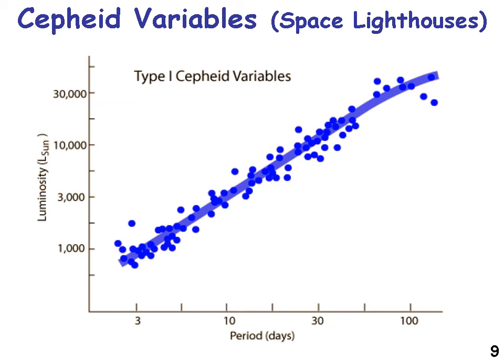Looking at this graph, it compares luminosity — how bright something is compared to the sun — against a period of time in days. Cepheid variables are brighter when the blinking on-and-off timing is slower. For example, if it takes a hundred days to cycle from one bright time to the next, that corresponds to a luminosity of thirty thousand times brighter than the sun. Because luminosity and period correlate so neatly, these space lighthouses are very useful for measuring distances in space.